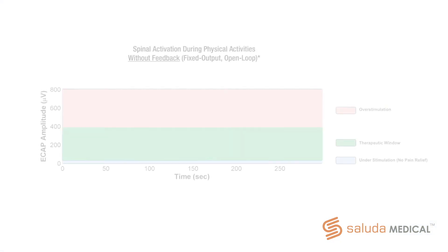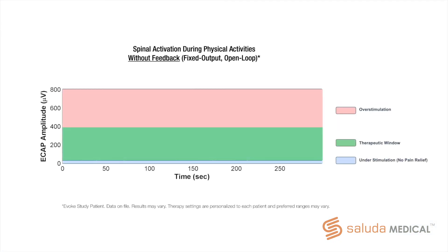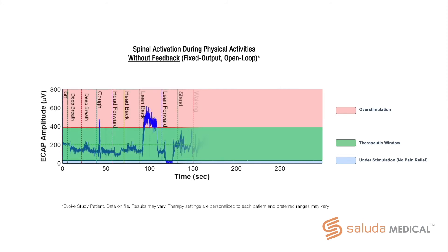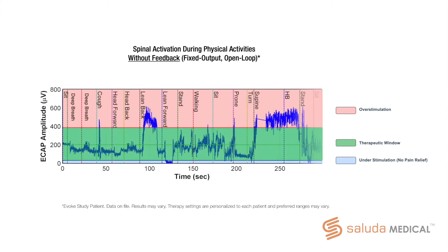We can illustrate what these changes look like over time with respect to the therapeutic window to contrast the effects of fixed output and closed loop systems. In this example, with a fixed output system, there are occurrences of activation outside the supramaximal range, related to posture or physiological processes. There are also instances of the activation falling below the threshold level, likely resulting in no therapeutic benefit at all, meaning the energy from the stimulus is simply wasted.